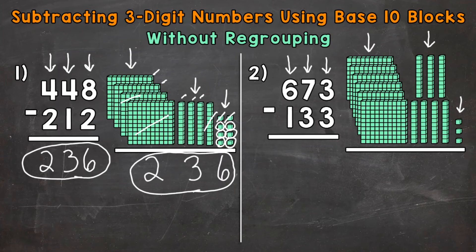We always start with the ones when we subtract whole numbers. So 3 minus 3 — let's take away or subtract 3 here: 1, 2, 3. How many ones do we have left? Well, 0. So we need to put a 0 in the ones place in our answer.